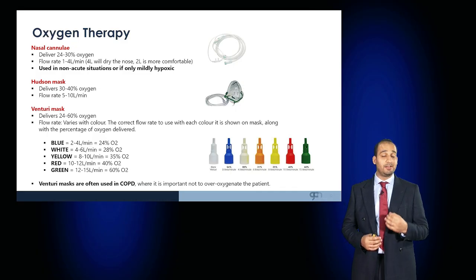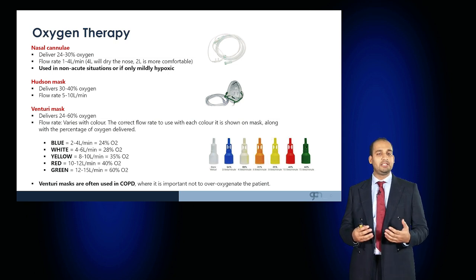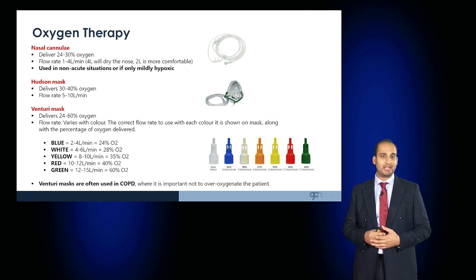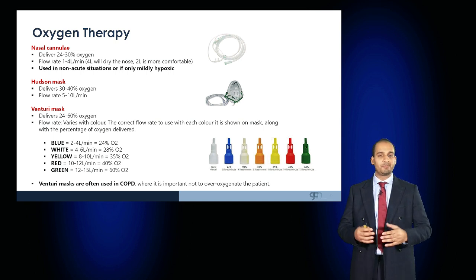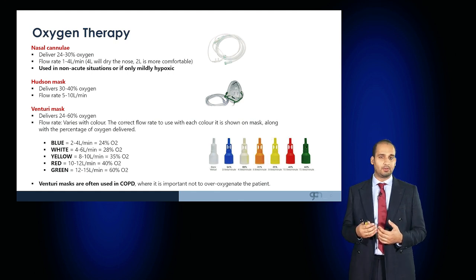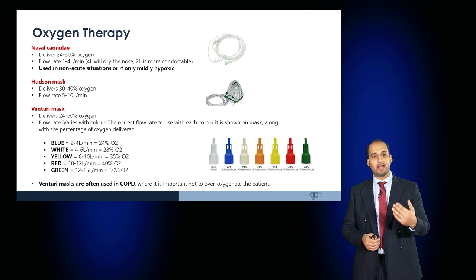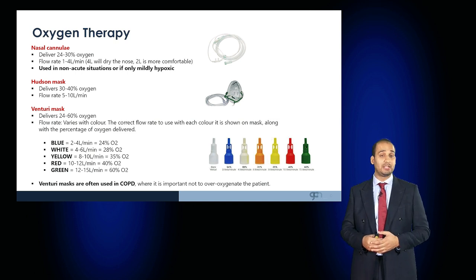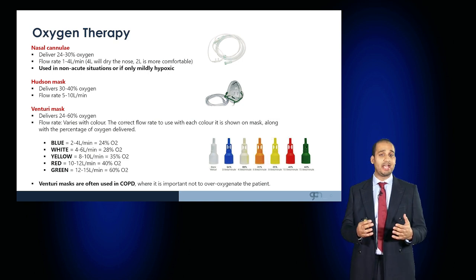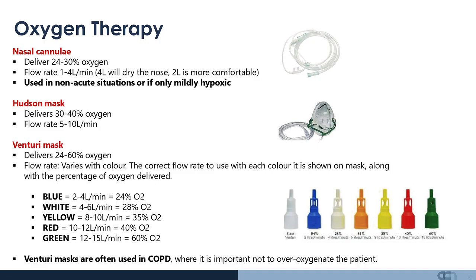Nasal cannulae used in non-acute situations deliver 24 to 30% oxygen and tolerate a rate of one to four liters of oxygen per minute. The higher the rate, the increased likelihood of drying out the nasal mucosa and becoming uncomfortable for the patient. If higher flow rates or oxygen concentrations are required, a Hudson mask can be used which can deliver 30 to 40% oxygen at higher rates of up to 10 liters a minute.